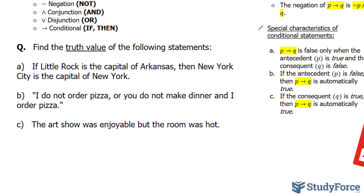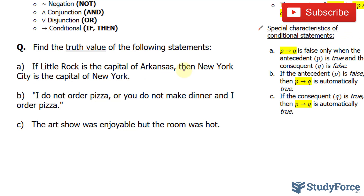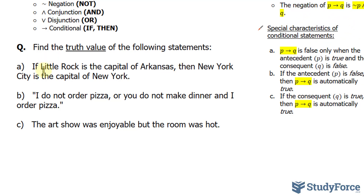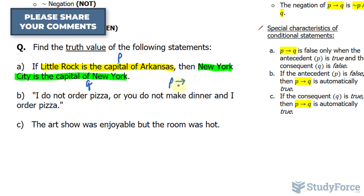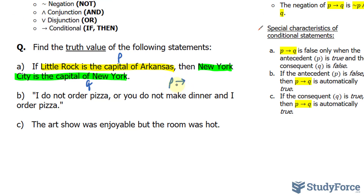So we have a conditional statement here — if and then — and two statements: Little Rock is the capital of Arkansas, and the other sentence, New York City is the capital of New York. You would then assign a letter for each of these statements; we'll call this P and Q. This would be written down symbolically as P with an arrow pointing to the right, Q.